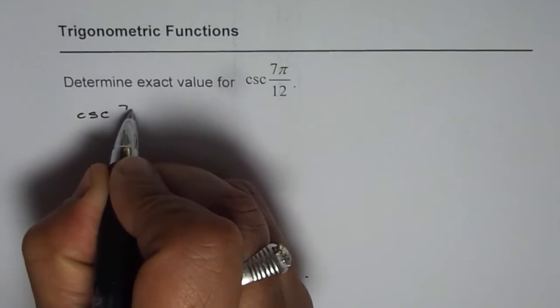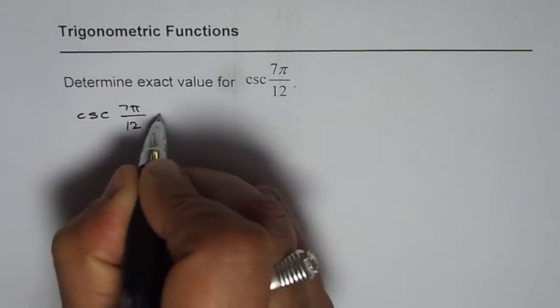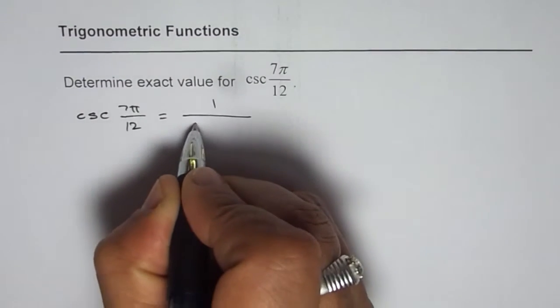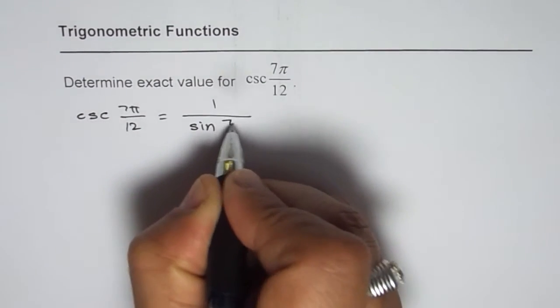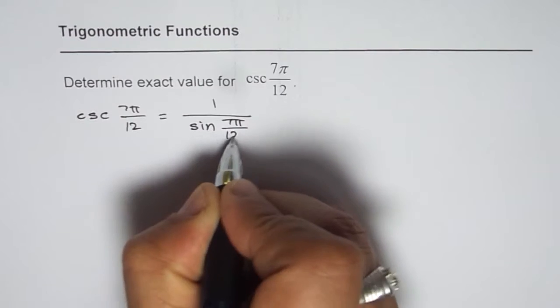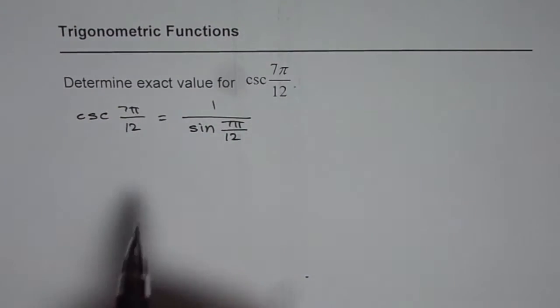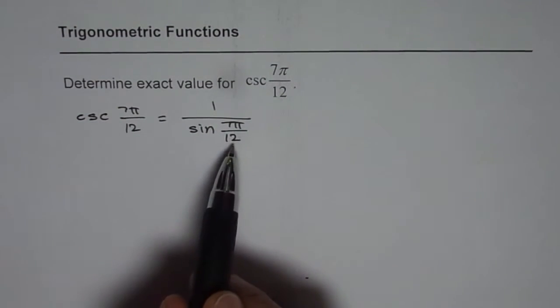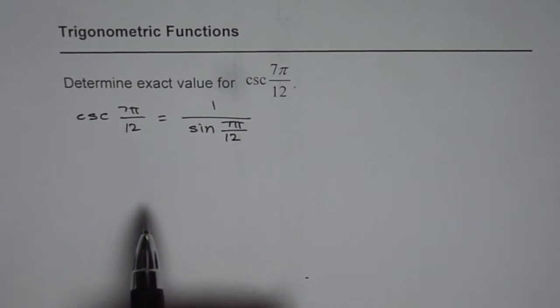Now you can write cosecant 7 pi by 12 as 1 over sine 7 pi by 12. So what we will do is we'll try to find the answer for sine 7 pi by 12 and then write its reciprocal.